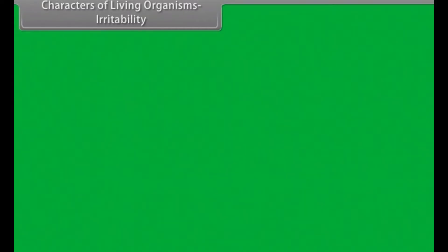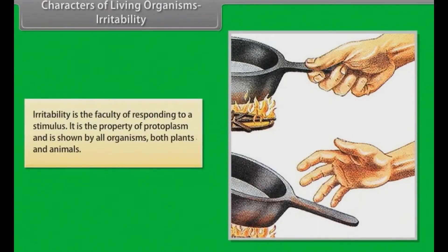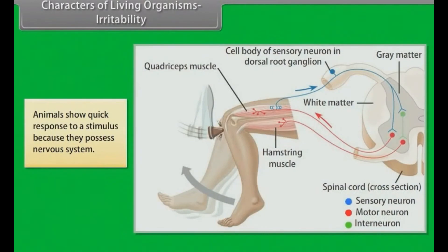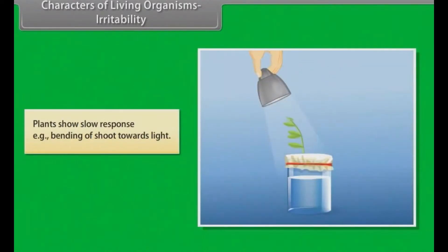Irritability is the faculty of responding to a stimulus. It is the property of protoplasm and is shown by all organisms, both plants and animals. Animals show a quick response to a stimulus because they possess a nervous system. Plants show a slow response — for example, the bending of a shoot towards light.